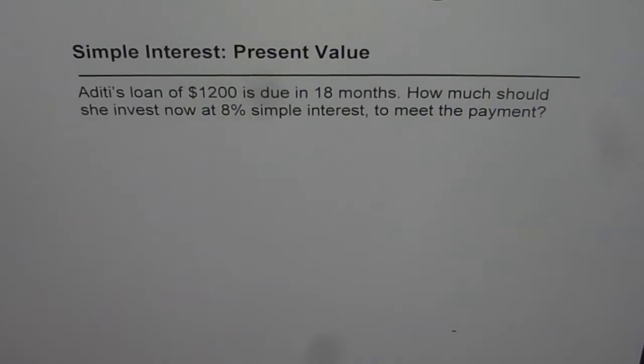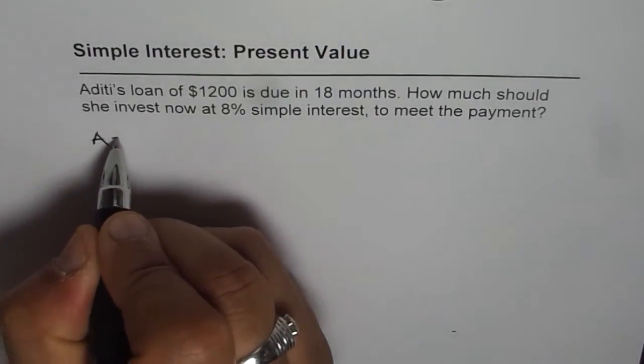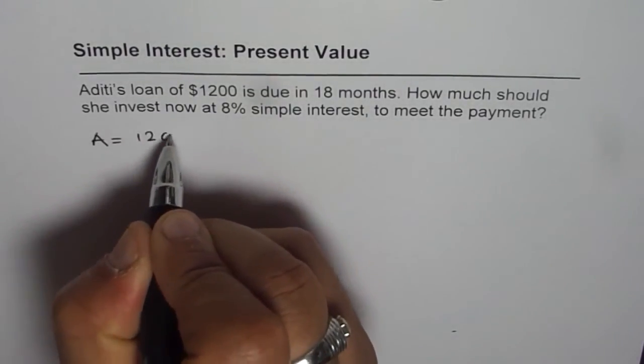So in this question, for a change, we know the final amount, the future value, and that amount is $1200. So A is given to us as $1200.